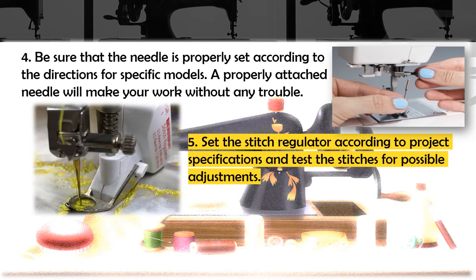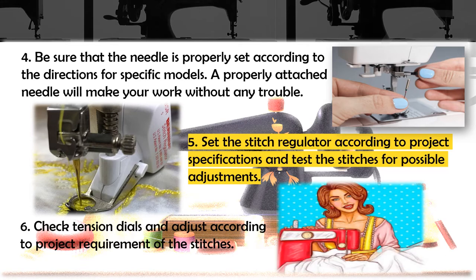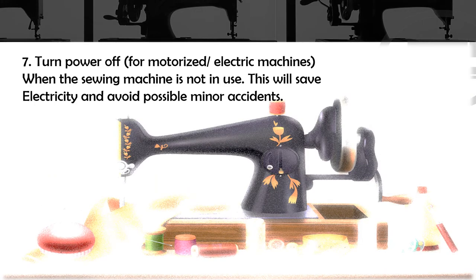Number five: set the stitch regulator according to project specifications and test the stitches for possible adjustment. Number six: check tension dials and adjust according to project requirements for the proper quality of stitches. Number seven: turn power off, especially if the machine is motorized or electric, when the sewing machine is not in use. This will save electricity and avoid possible minor accidents.